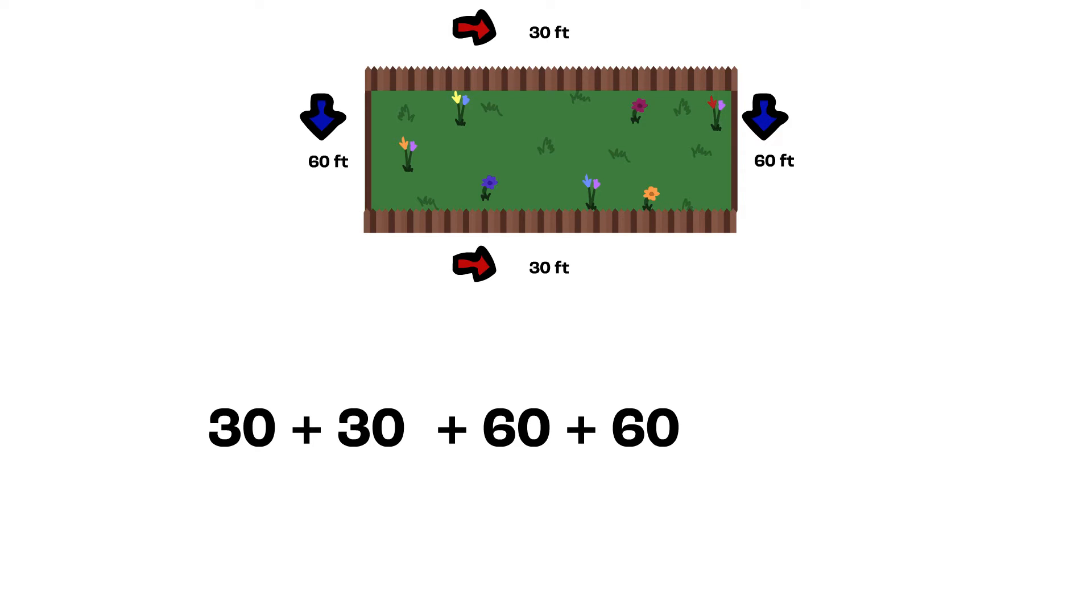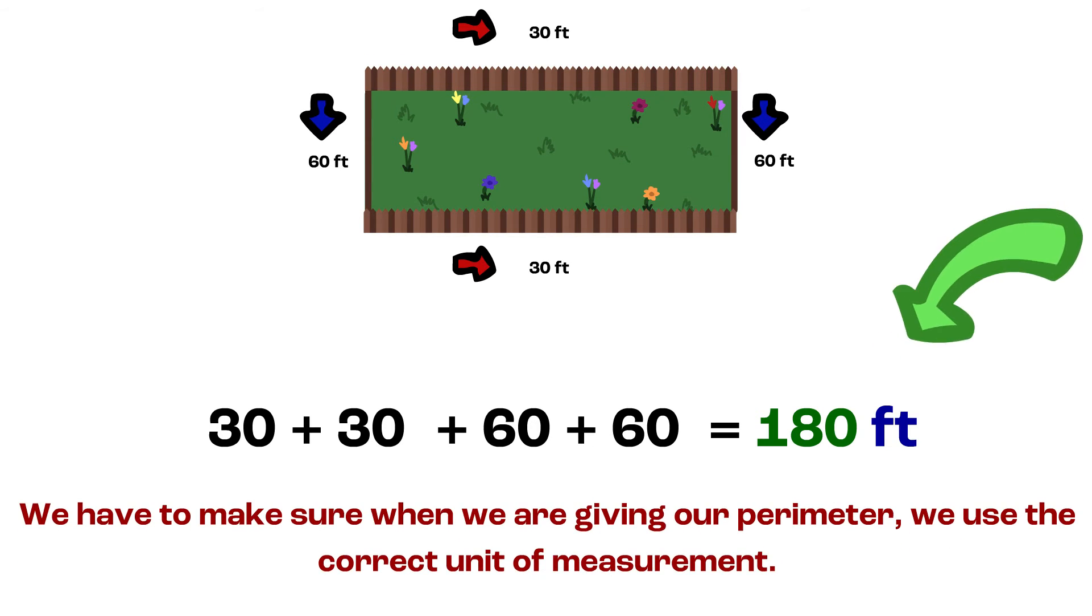This makes our total 180 feet. So, our perimeter is 180 feet. Notice how I included feet in my answer. We have to make sure when we are given our perimeter, we use the correct unit of measurement.